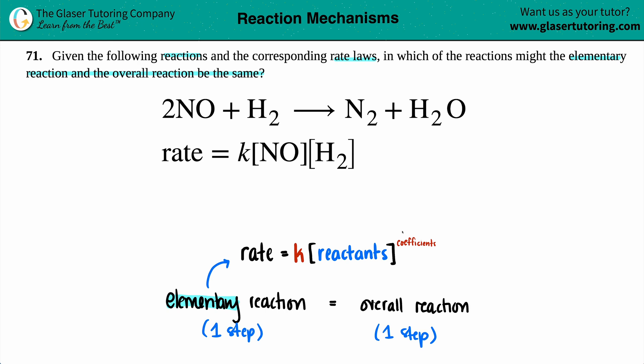So let's see. Rate equals K. That's standard. Let's see if the reactants are the same. In the equation, they give us NO. NO. So that's the same. And then we have H2. H2. So that's the same. But now we've got to pay attention to those coefficients.